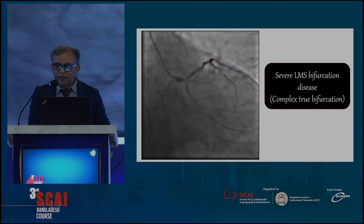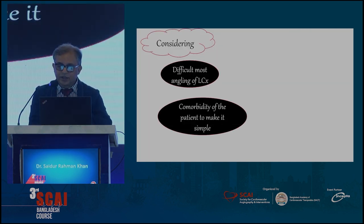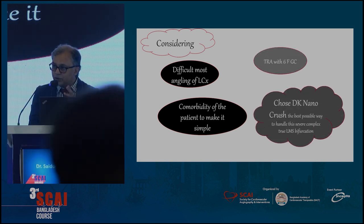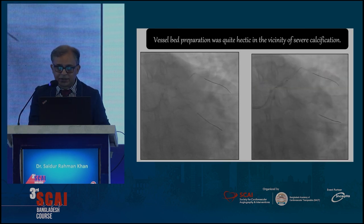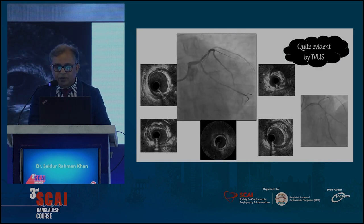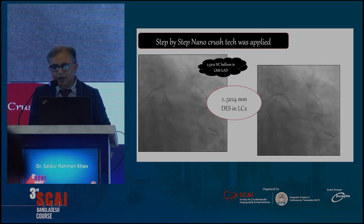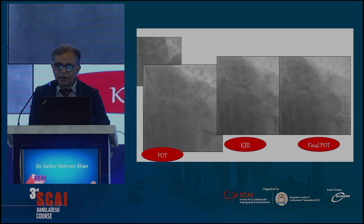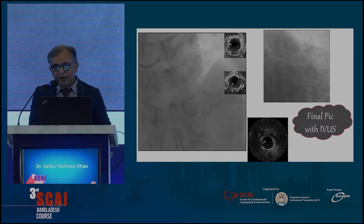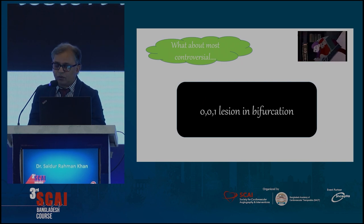Now, how did I approach this next case? A 75-year-old male with severe left main bifurcation lesions, absolutely fulfilling the definition criteria — difficult angulation, and patient comorbidity considered. We chose a trans-radial approach and used the DK nano crush technique rather than standard DK crush. We performed every step of nano crush — IVUS, step-by-step technique — and the final IVUS with the final picture was really satisfactory for this case.